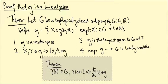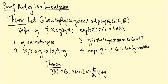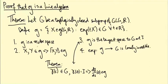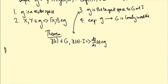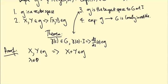Property three says: if γ(s) is a path in G passing through the identity at s=0, then its derivative dγ/ds at zero is in little g. We'll use this result. To prove little g is a vector space, we need to show that if X and Y are in little g then X+Y is in little g, and if λ is a real number then λX is in little g. We also need to show [X,Y] is in little g. In each case, it suffices to produce a suitable path.